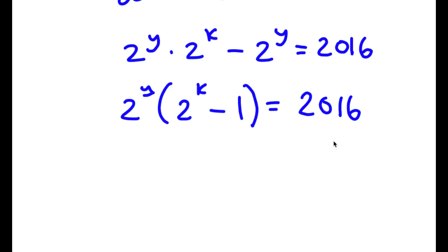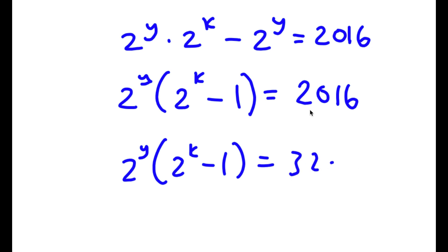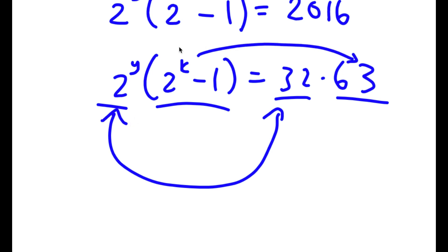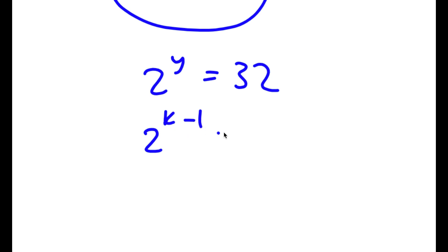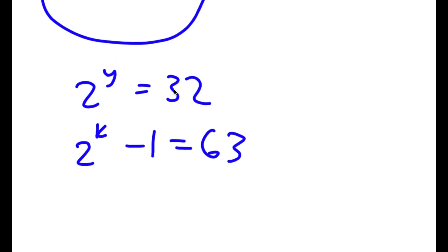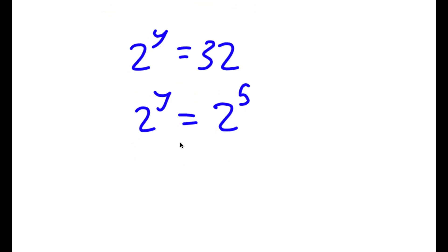Now I can rewrite 2016 as 32 times 63. Notice that I have an even number times an odd number. Over here, 2 to the power of y is even, and 2 to the power of k minus 1 is odd (since an even number minus 1 is odd). So these factors match: 2 to the power of y equals 32, and 2 to the power of k minus 1 equals 63. For 2 to the power of y equals 32, since 32 equals 2 to the power of 5, we get y equals 5.